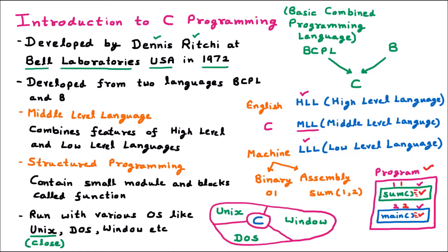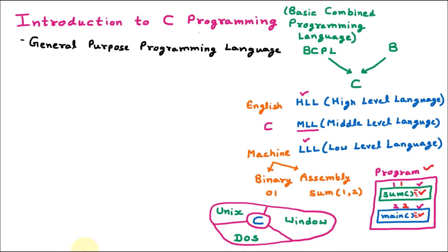C is called a general purpose programming language, meaning it solves general everyday problems. For example, we can design a calculator, a small utility program, a game back-end, or even graphics applications using C programming. It is a general purpose language because it solves daily basis problems.